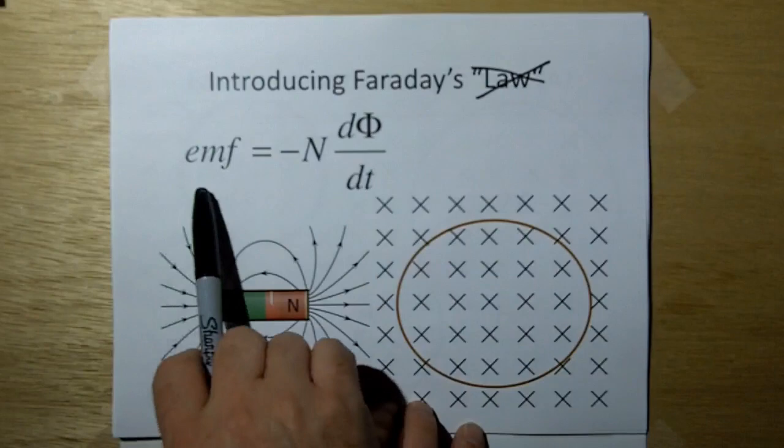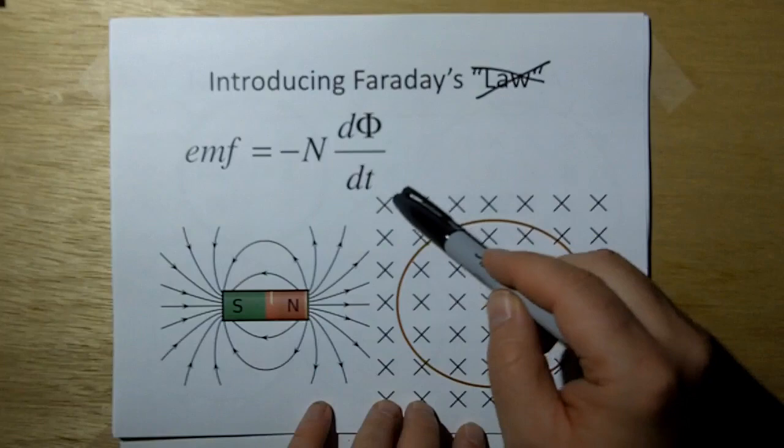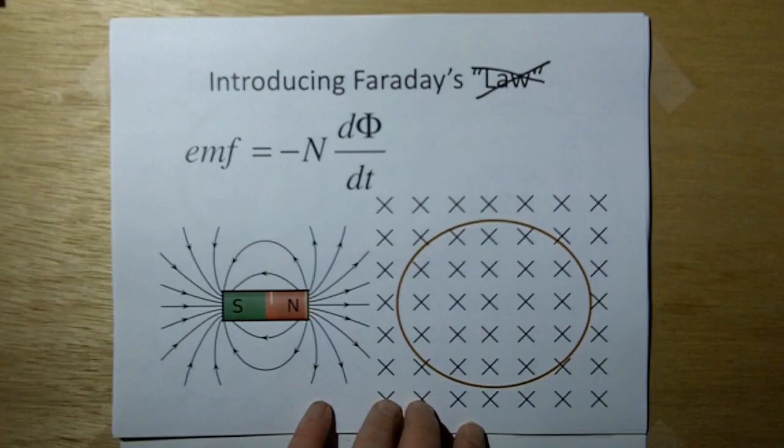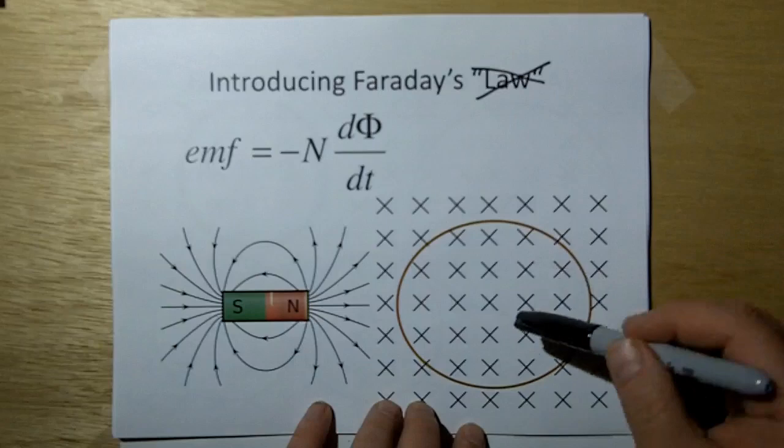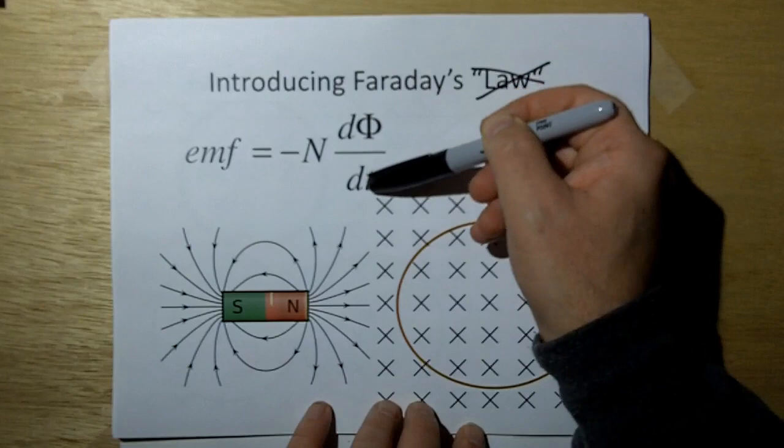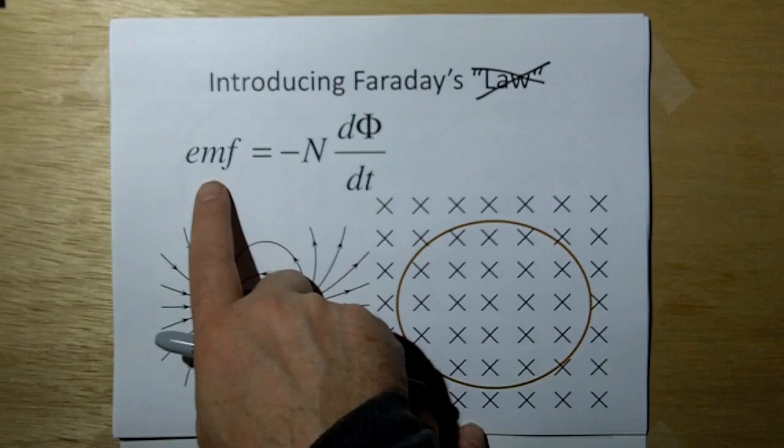The mathematical equation says that the EMF, electromotive force, equals the negative of the number of turns N times d phi dt. This stands for the change of the number of flux lines in the loop. Phi is the number of flux lines, d phi dt means the change of flux over time. So it's not the total number of flux lines, it's how quickly the flux lines change over time. That flux change causes the EMF in the loop of wire.